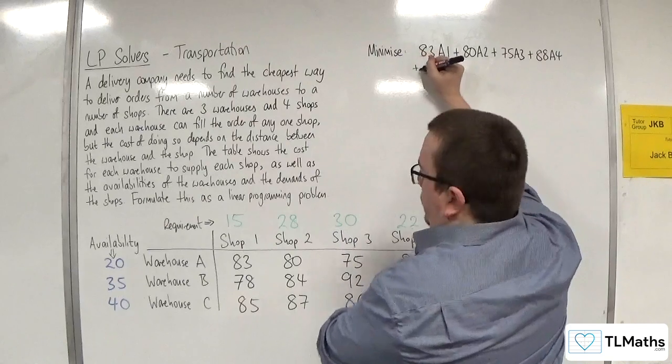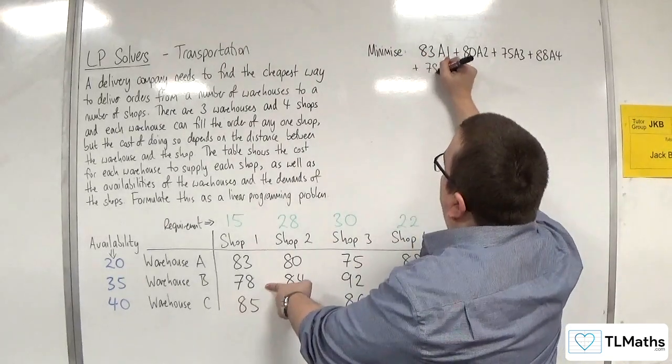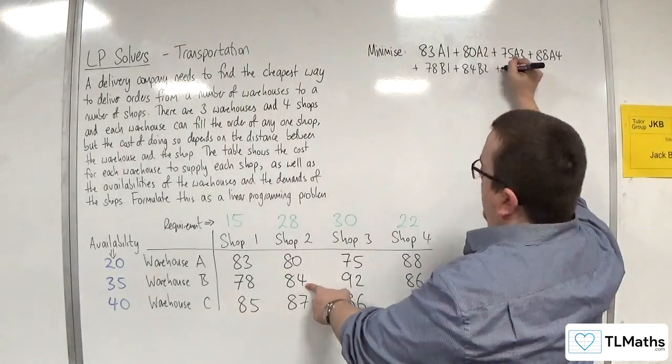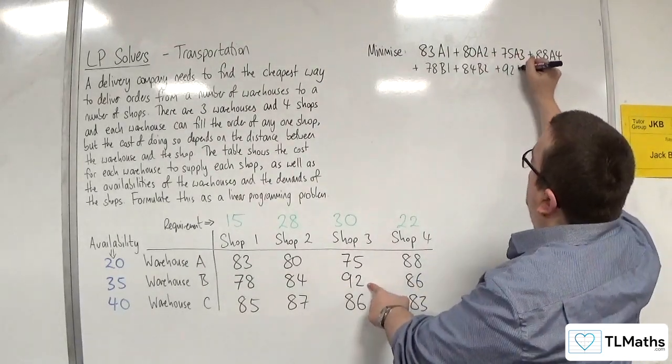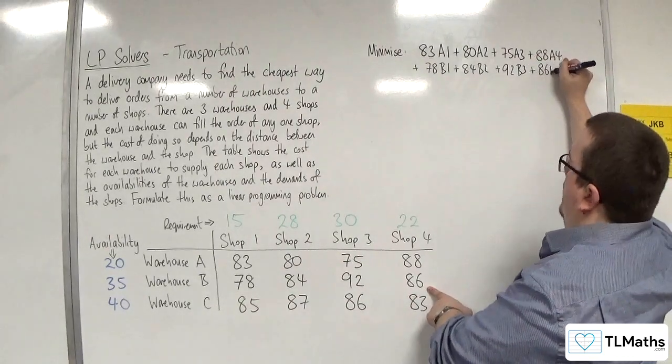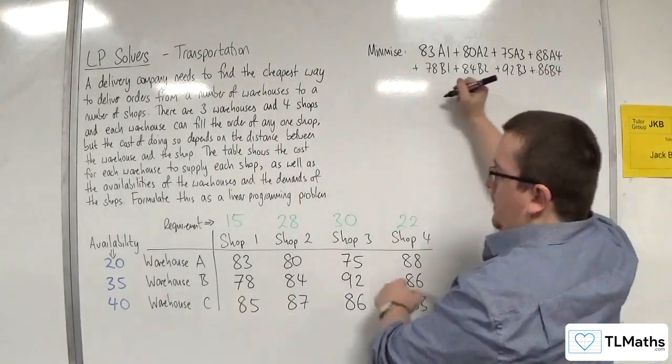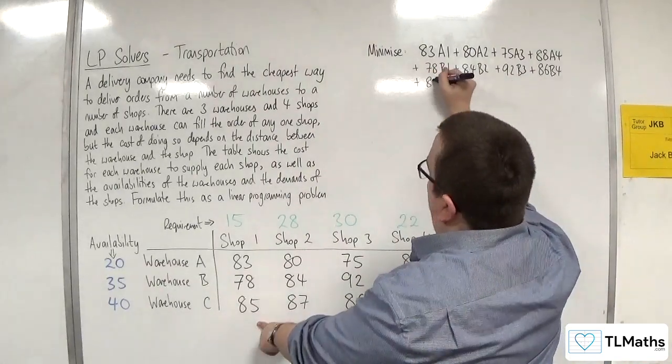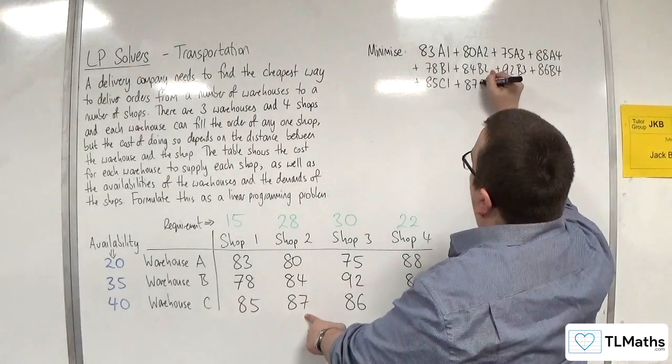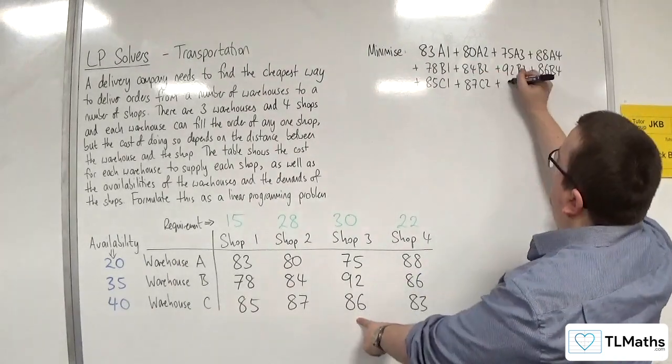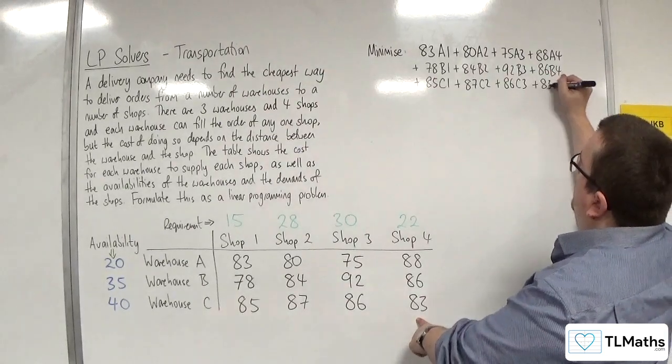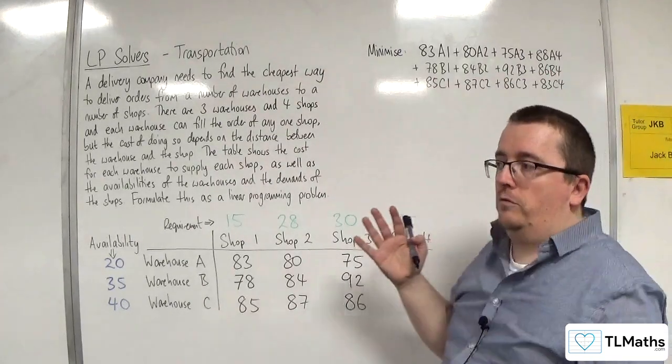Plus 78B1 plus 84B2 plus 92B3 plus 86B4. And then plus 85C1 plus 87C2 plus 86C3 plus 83C4. So that's my objective function.